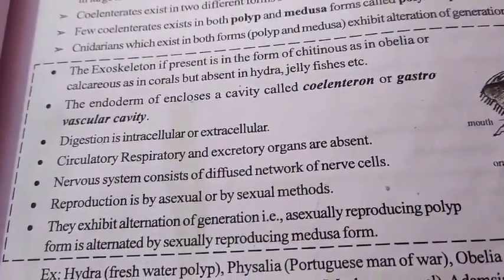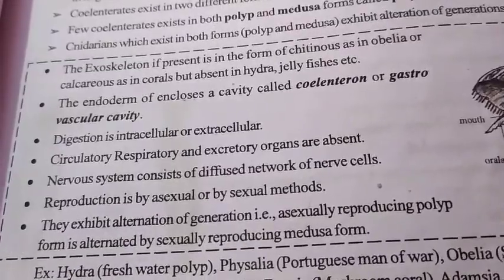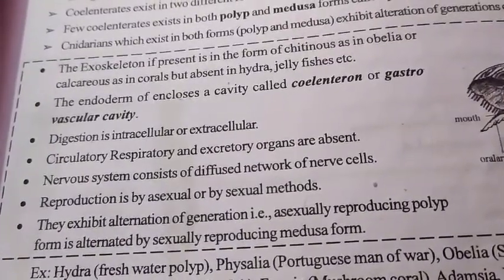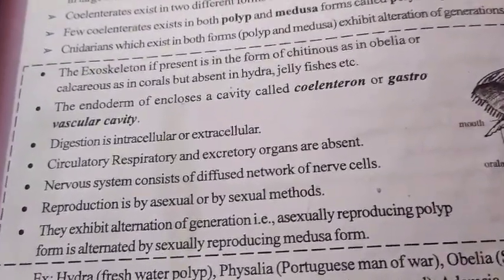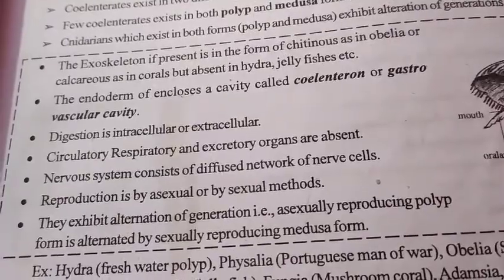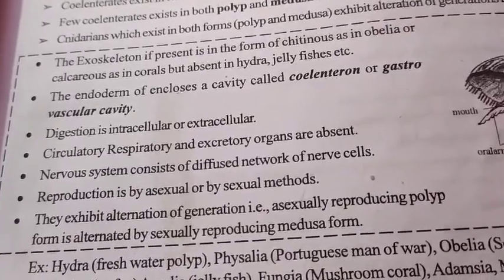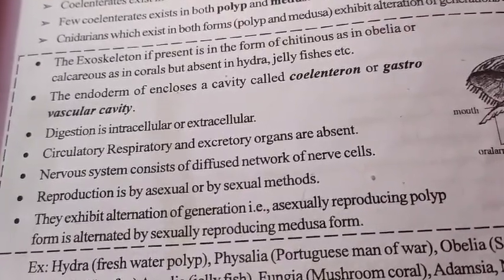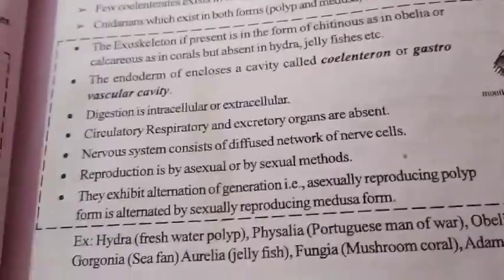Reproduction in Cnidaria occurs by two modes: sexual and asexual. They contain nerve cells. Excretory organs are absent. Digestion is intracellular.